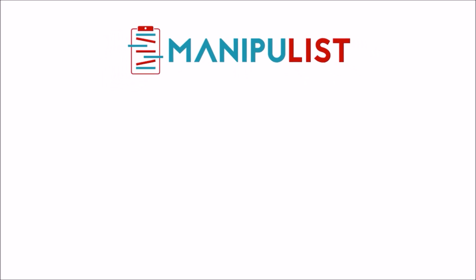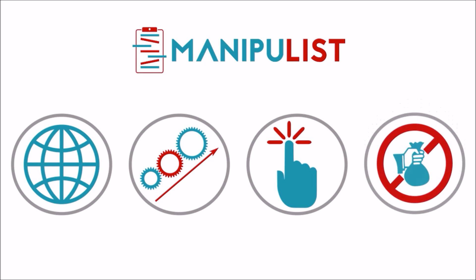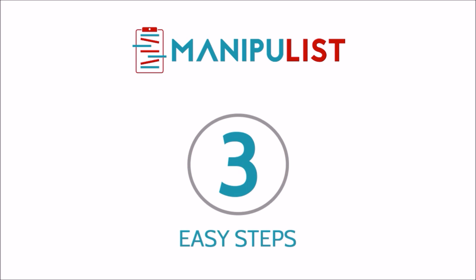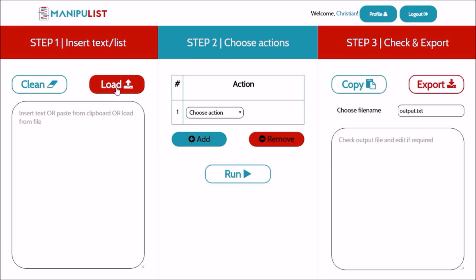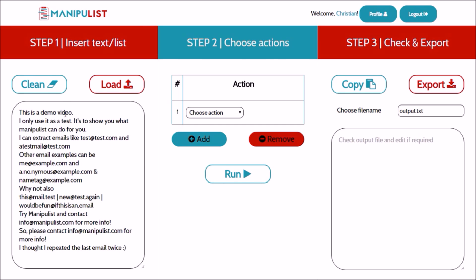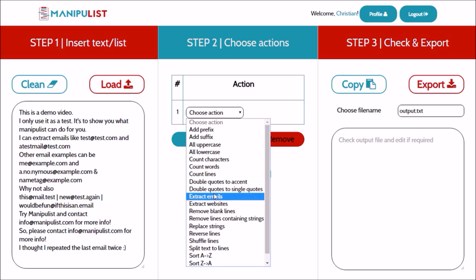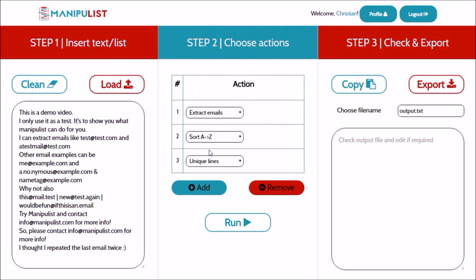Manipulist is a web-based, easy to use, and free text and list manipulator and scraper, which allows you to perform multiple actions on the same input text in three easy steps. Step one: load a text file, insert your text, or paste it in the input area. Step two: choose multiple actions such as email extraction, sorting, unique lines, and run the actions.